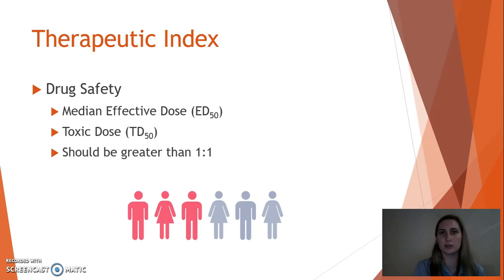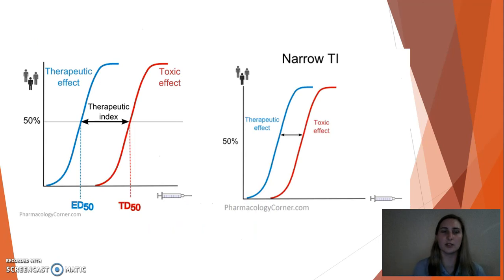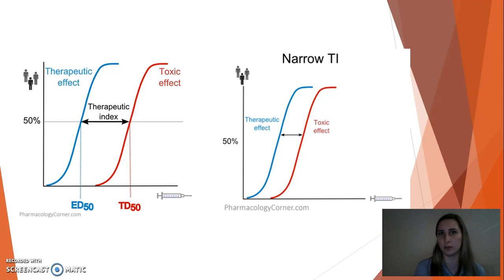The toxic dose TD50 is what's considered an overdose of the drug — that point where you're experiencing adverse secondary effects. To have a safe drug, the therapeutic index between your ED50 and TD50 needs to be greater than one to one. As you can see on the picture on the left, the therapeutic index is pretty wide. In 50% of the population, you achieve a desired effect with a certain dose, and if you exceed that dose by about two times, that becomes the toxic dose in 50% of the population. That is considered a safe therapeutic window.